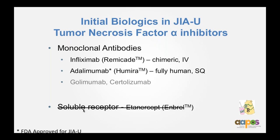The agents that work for uveitis are monoclonal antibodies directed toward TNF-alpha. Etanercept (Enbrel) is a TNF blocker that is a soluble receptor — it does not work for uveitis, and kids on Enbrel for their JIA are at relatively high risk for developing uveitis. The agents to reach for are either infliximab (Remicade), an IV-administered chimeric antibody that is partially mouse and partially human, or adalimumab, a fully humanized monoclonal antibody delivered by subcutaneous injection at home so kids don't need to come in for IV treatment.